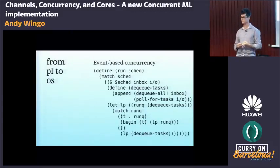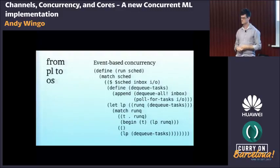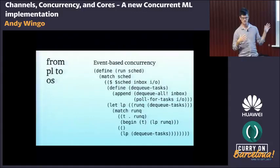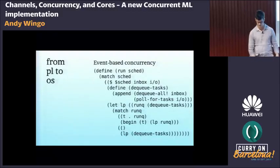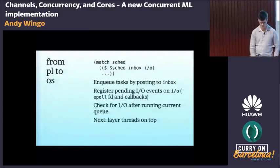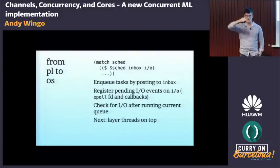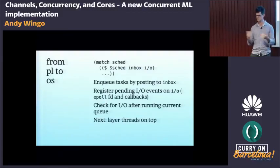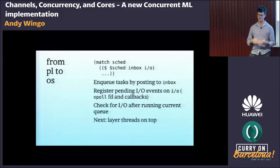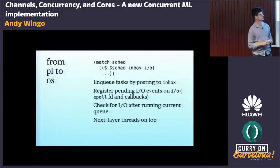Tasks come from the run queue — our inbox — where other cores can post messages. We also get tasks from the kernel, which tells us which file descriptors are ready; we look up which tasks are associated with those and add them to the queue. We can take this programming language and build it up like an operating system. Instead of just using callbacks we can layer threads on top of those callbacks using delimited continuations.